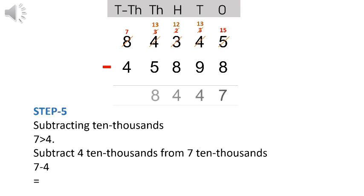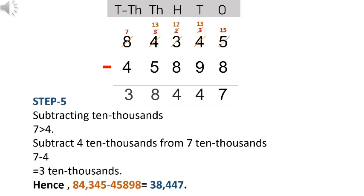Subtracting the ten thousands column: since seven is greater than four, it does not need to borrow. Seven ten thousands minus four ten thousands equals three. Write three in the ten thousands column. So when we take away 45,898 from 84,345, we get the difference of 38,447.